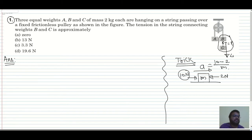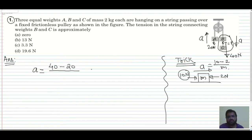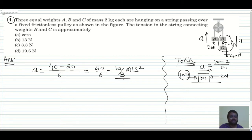Here B and C are two masses — that's 40 N downward — and on the other side only A, that's 20 N downward. Acceleration is in the 40 N direction (upward for B and C). So acceleration a = (40 − 20) / (2 + 2 + 2) = 20 / 6 = 10/3 m/s².